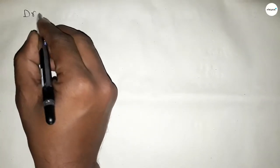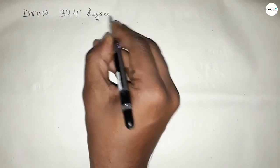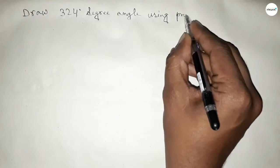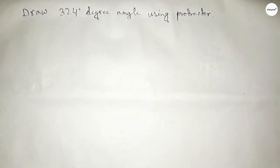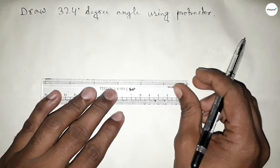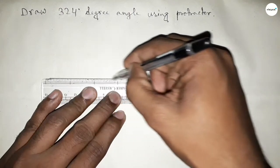Hi everyone, welcome to SSR Classes. Today in this video, we have to draw a 324-degree angle using a protractor. So let's start the video. First of all, draw a straight line of any length.